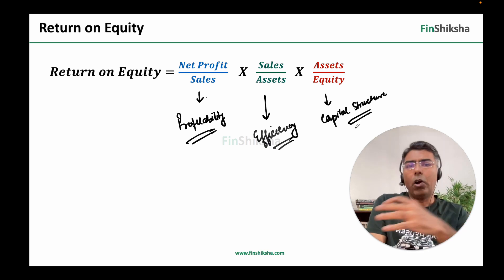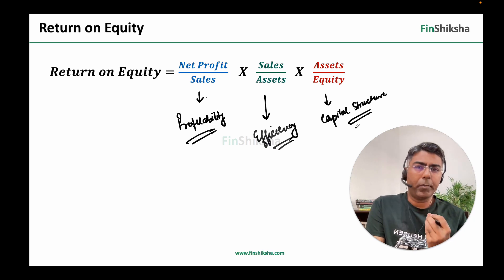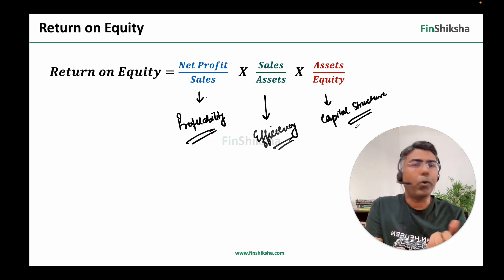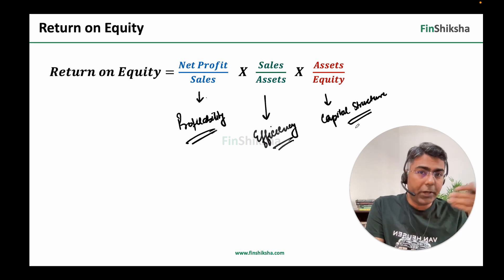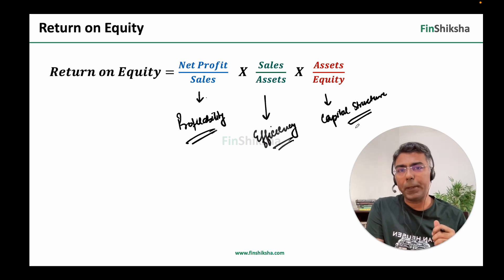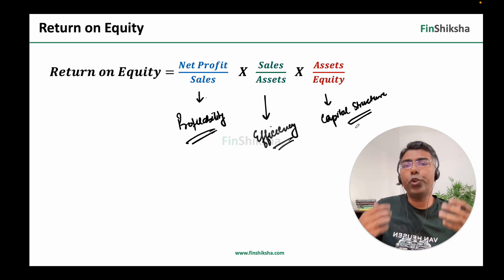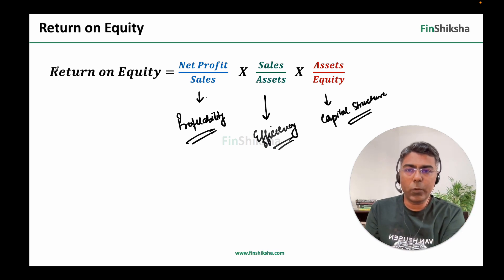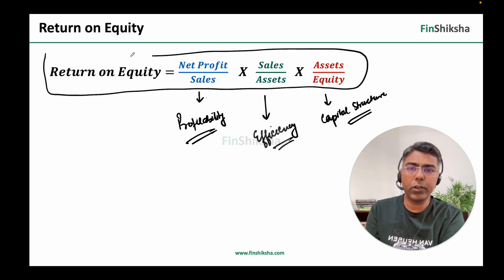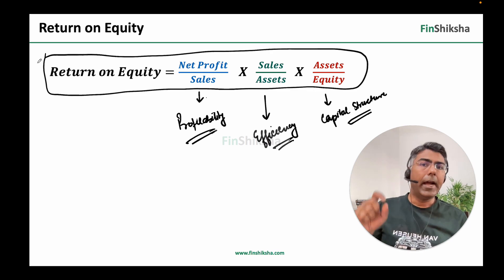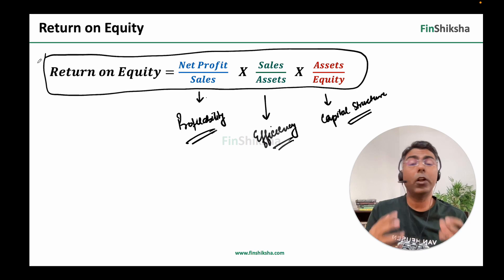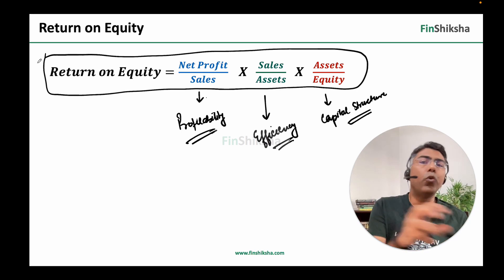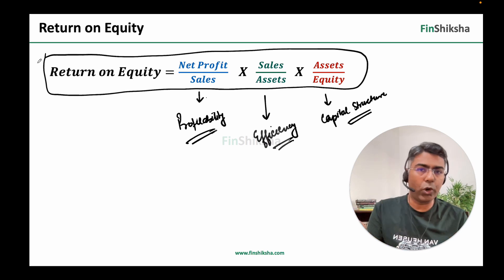For example, all things being equal, if a company just borrows a lot of money and spends it all into marketing, there's a possibility of a slight increase in profits. At this point equity has not changed, so net profit upon equity will appear to be better. But over time, higher debt will result in problems for the company. So it has to be understood in this context. This equation — net profit/sales × sales/assets × assets/equity — is what is called the DuPont analysis equation, and it helps us identify what is causing the increase or decrease in return on equity.